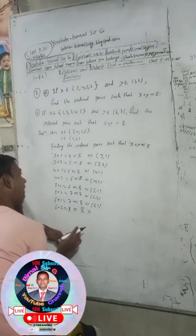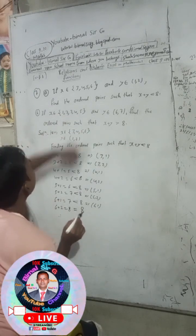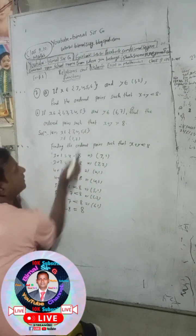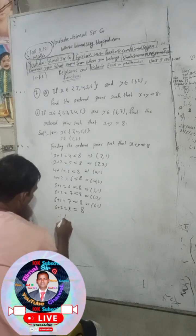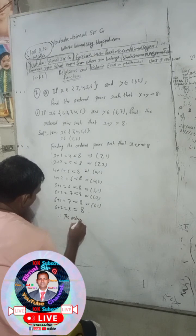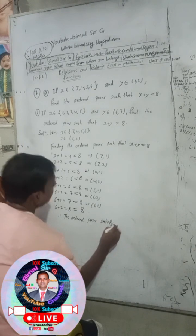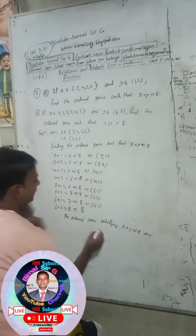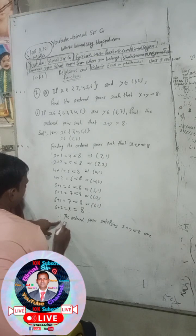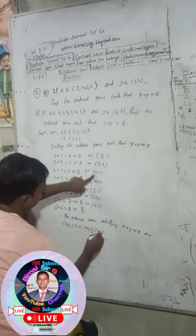Therefore, the required ordered pairs satisfying x plus y less than 8 are: (3,1), (3,2), (4,1), (4,2), (5,1), (5,2), (6,1).